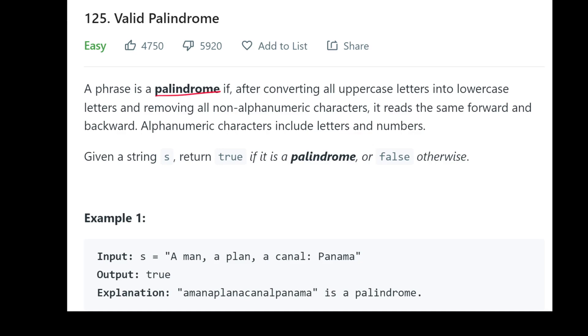So a phrase is a palindrome after converting all uppercase to lowercase and removing all non-alphanumeric characters - this is going to be the tricky part for us. It reads the same forward and backwards. Alphanumeric obviously includes letters and numbers, and we're just returning true or false.